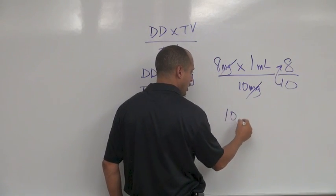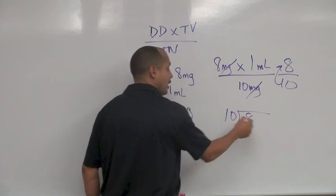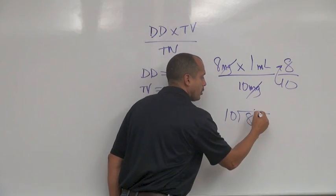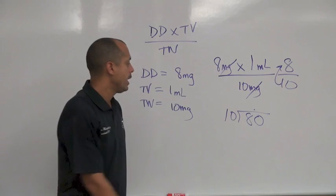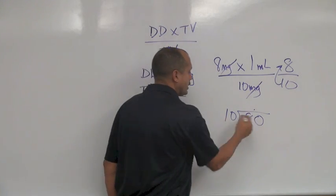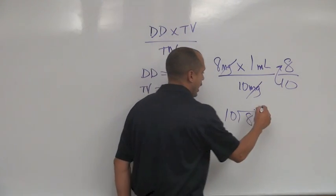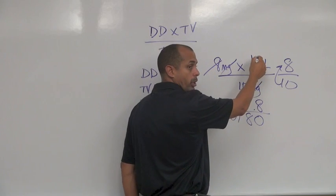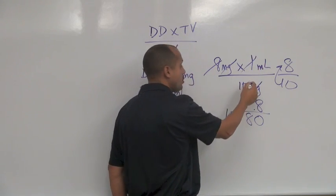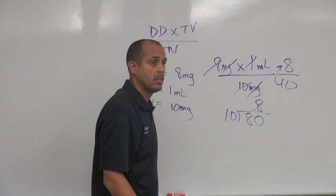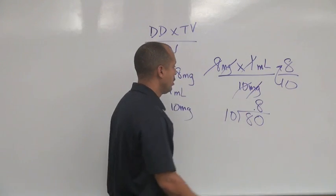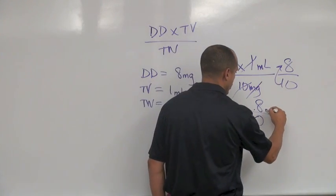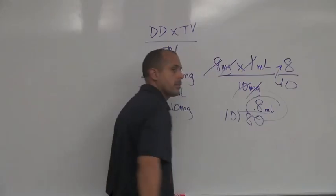So we take that bottom number and divide it into the top number. Does ten go into eight? No, so we add a decimal so we can add a zero. Ten goes into eighty how many times? Eight. Did we use the eight? The one? The ten? What's left? Point eight. Point eight what? Milliliters. That's my answer.